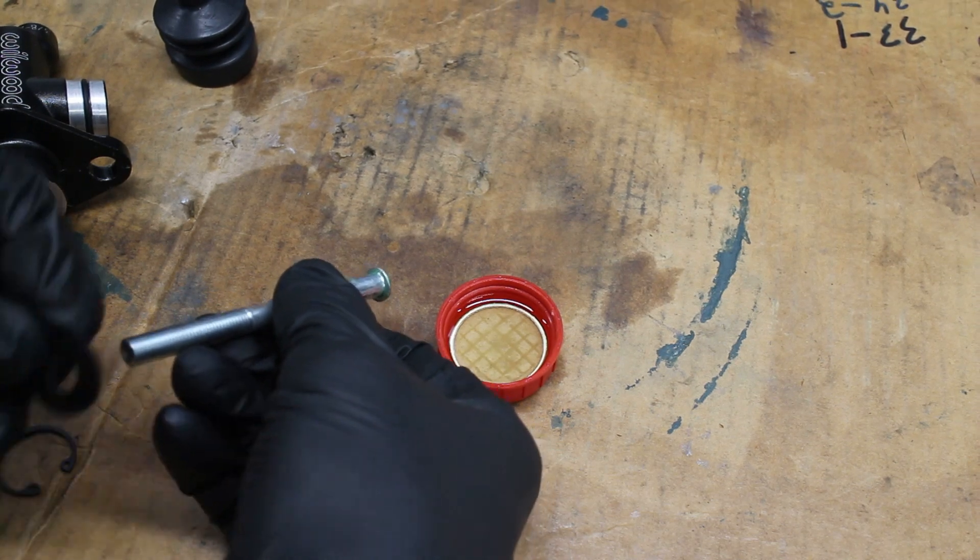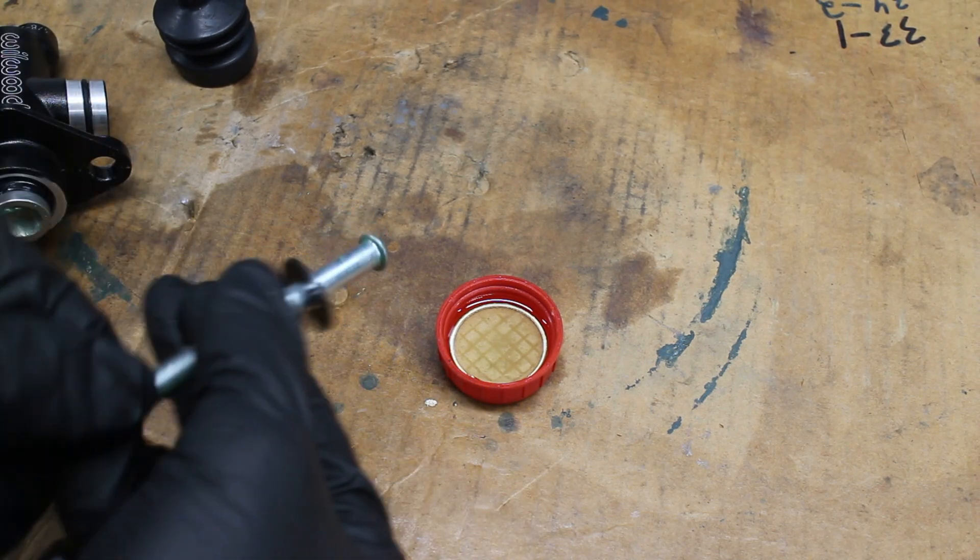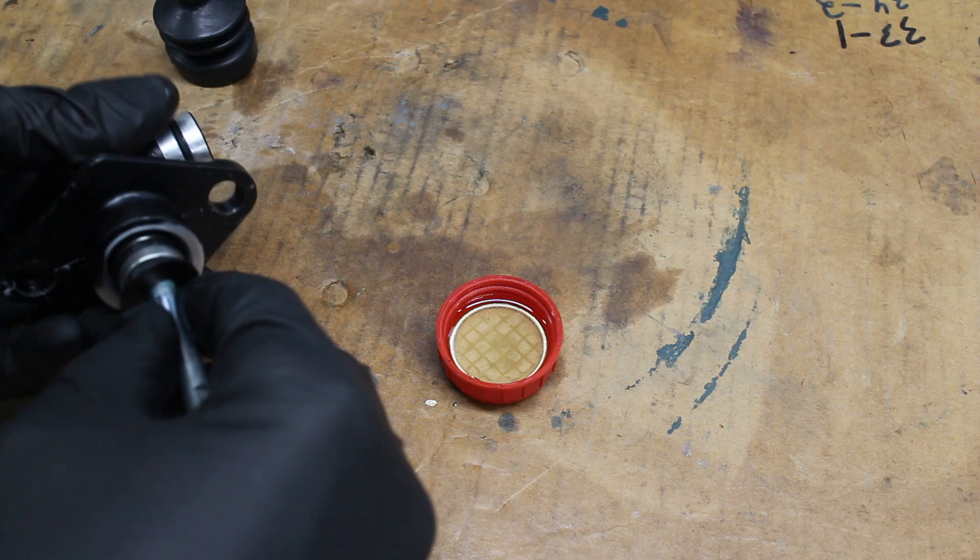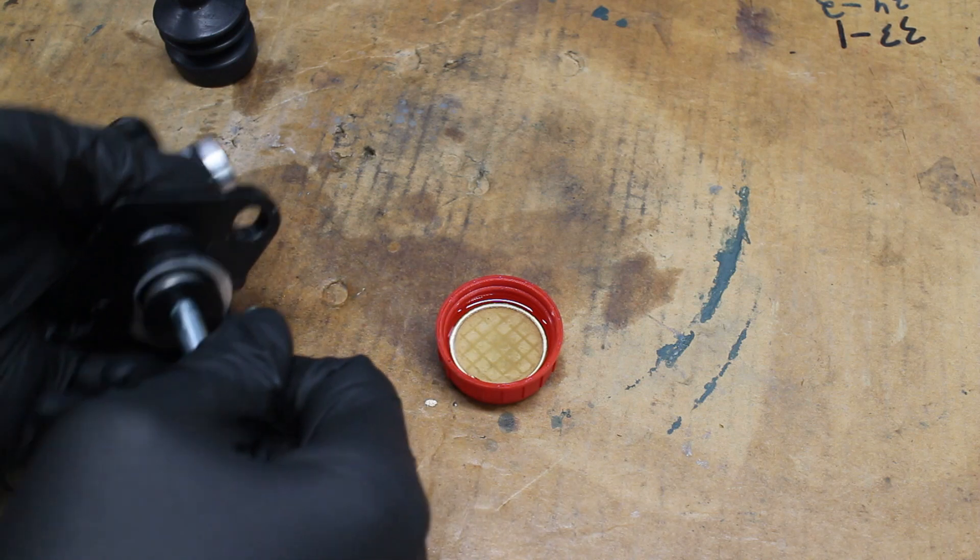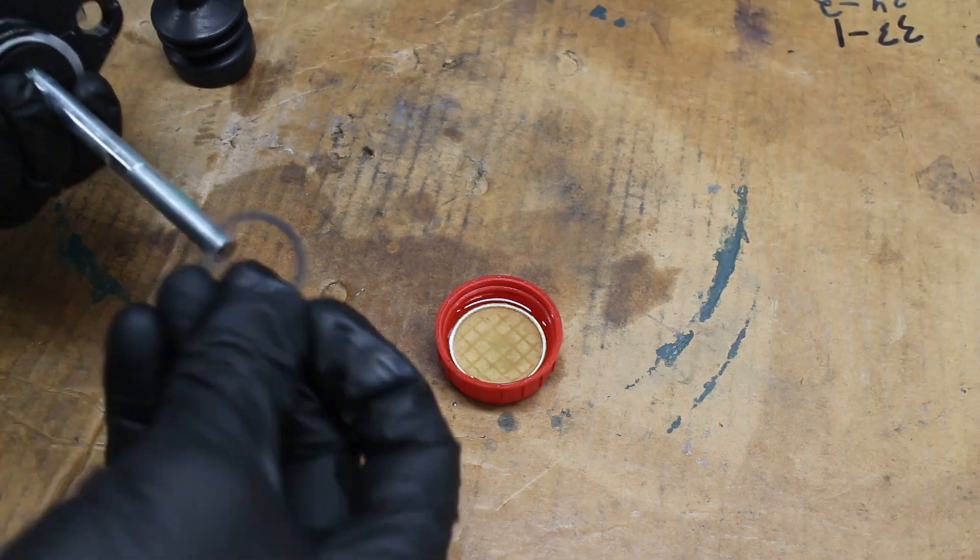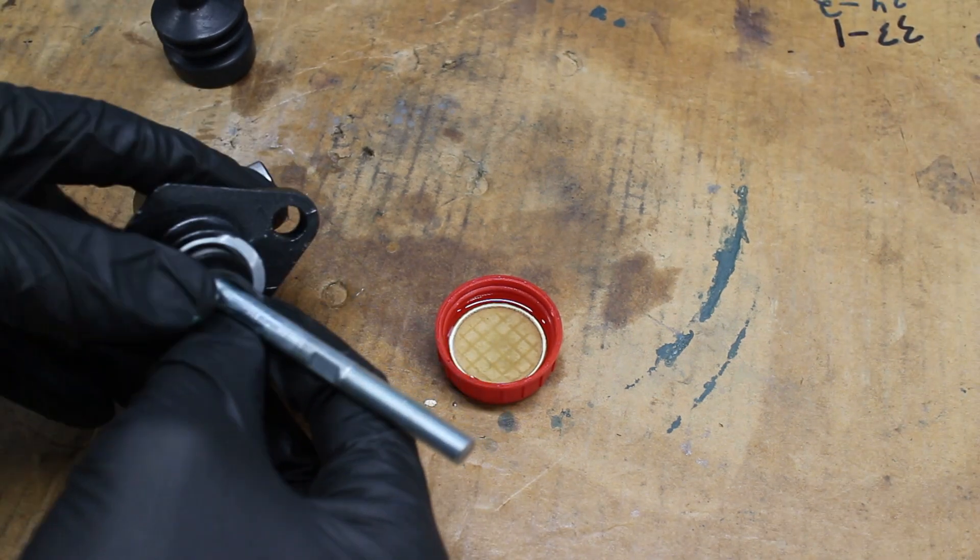The rod assembly goes on next, and this part is a little bit hard. You have to press the rod inwards and compress the spring while also aligning the retaining clip. It's a little difficult to do this while also filming.